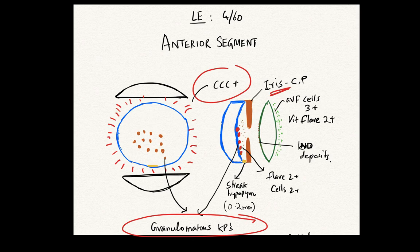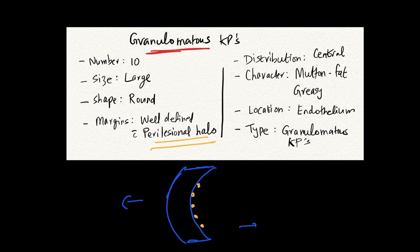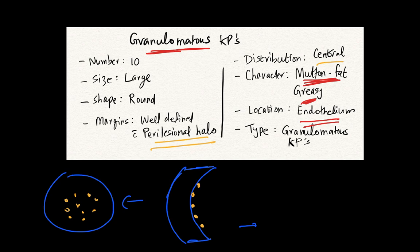To describe the granulomatous keratic precipitates: on the endothelium of the cornea, there were multiple, around ten, large round lesions with well-defined perilesional halos, centrally distributed. They had a thick, greasy, mutton-fat like appearance — the typical description of granulomatous keratic precipitates located on the corneal endothelium.